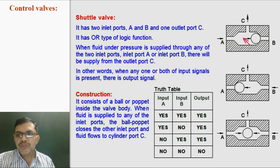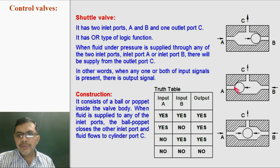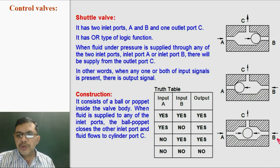When fluid is given to port B, then the valve will be pressed towards port A, port A is closed, and from port B fluid flows to the cylinder port. If fluid supply is given to port A as well as port B together, then the valve will stay in the middle and fluid flows to port C.